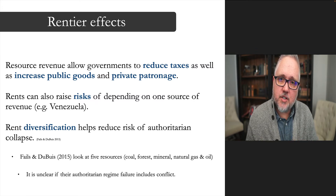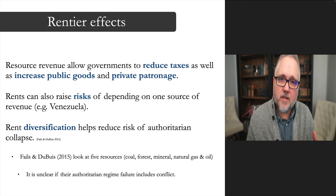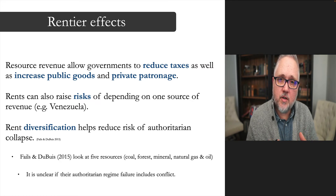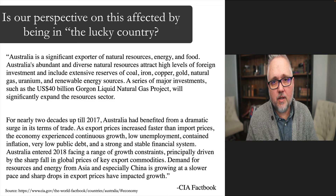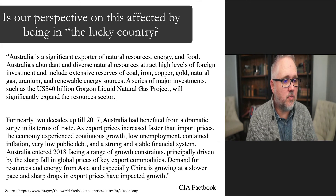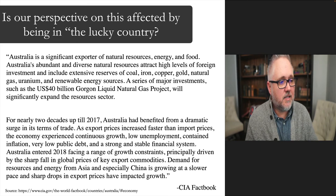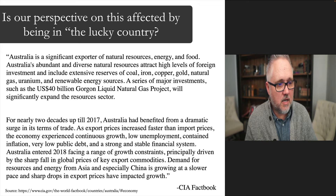It's interesting to teach this class and examine the connections between natural resource production and instability in a country like Australia. The US also produces a lot of natural resources — with the fracking boom the US became one of the largest oil producers quite quickly — however, as a percentage of the overall budget, the US is more diverse. Australia, as described in the CIA World Factbook, is a significant exporter of natural resources, energy, and food, with abundant and diverse reserves attracting high levels of foreign investment, including coal, iron, copper, gold, natural gas, uranium, and renewable energy sources.